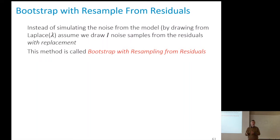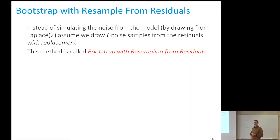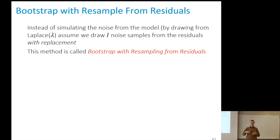What is the only random part in this model once we know the parameters? It's the epsilon. In the parametric bootstrap we draw epsilon from the distribution with the estimated parameter. There's another more radical method that is even simpler to implement and often used: to generate the noise terms epsilon, we don't assume a model — we simply assume they are independent from a common distribution, and we use the capital I estimated epsilons from fitting.